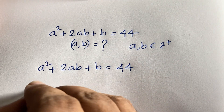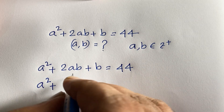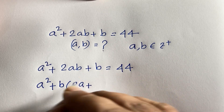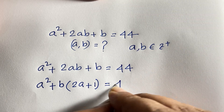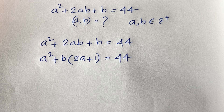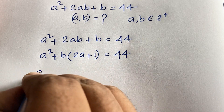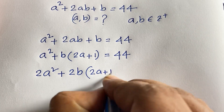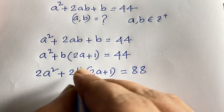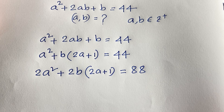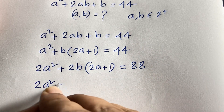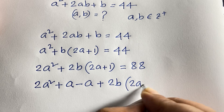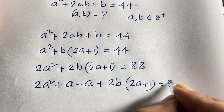In this equation I can see easily here b is common, so factoring out b gives b times (2a plus 1) is equal to 44. Now I multiply both sides by 2, it will be 2a squared plus 2b times (2a plus 1) is equal to 88. Then I add a and subtract a: 2a squared plus a minus a plus 2b(2a plus 1) equals 88.